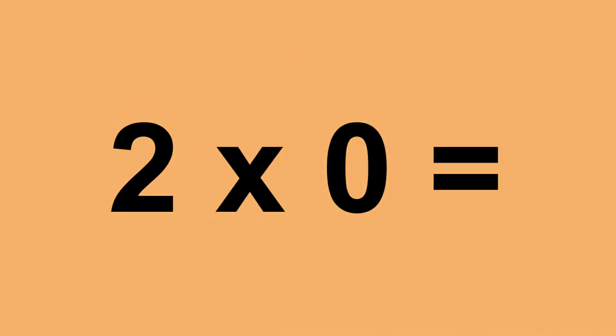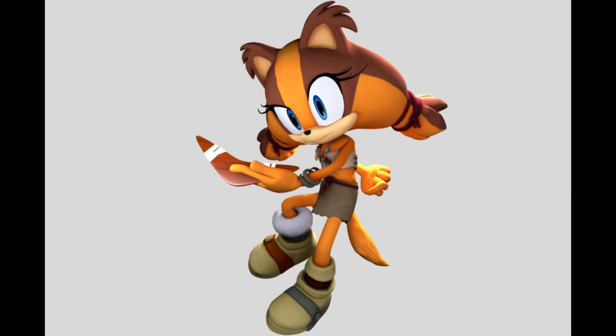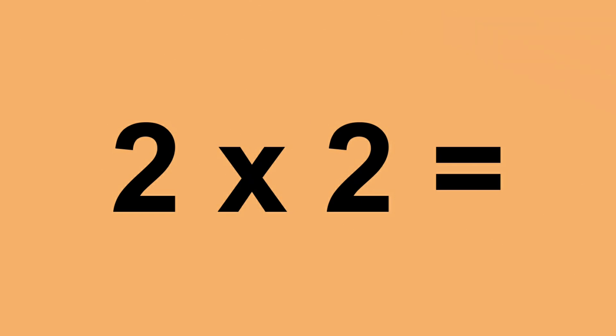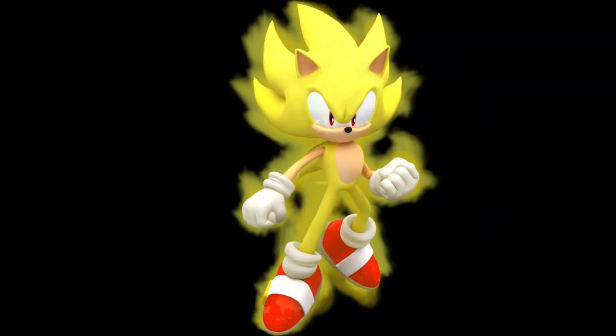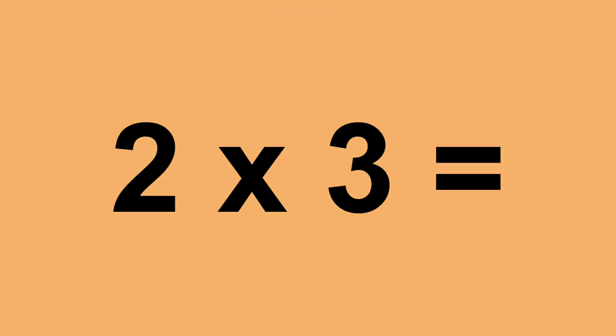Two times zero equals zero. Two times one equals two. Two times two equals four. Two times three equals six.